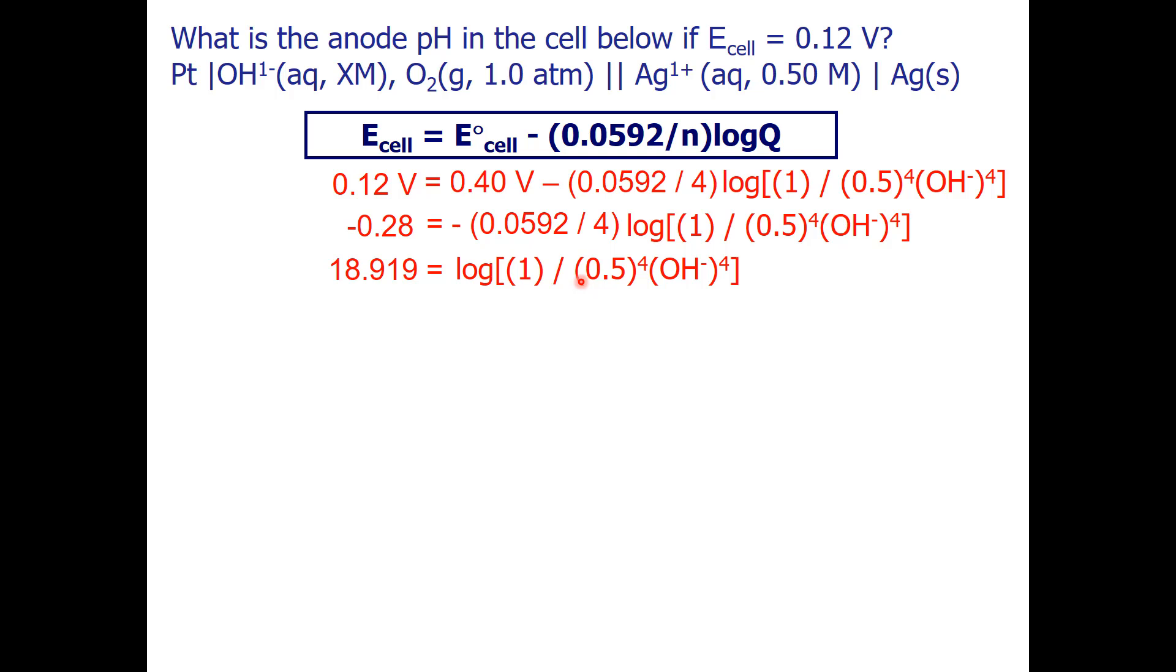I need to get rid of the log, so I will take both sides to the 10th power. Now, I have gotten rid of the log, and the easy thing to do here is move my hydroxide concentration to the 4th power over here and move my 10 raised to the power down here in the denominator. I've also taken 0.5 to the 4th power, which is 0.0625.